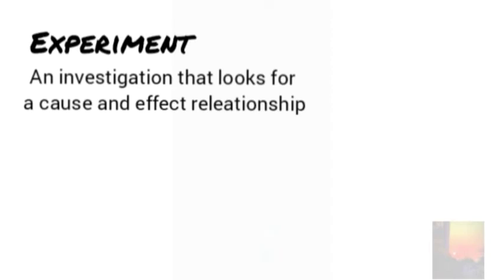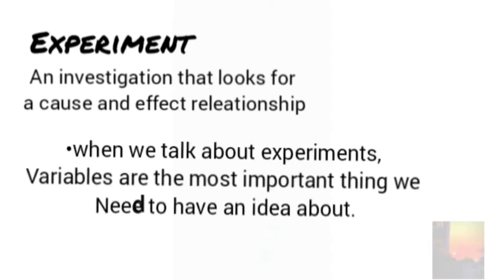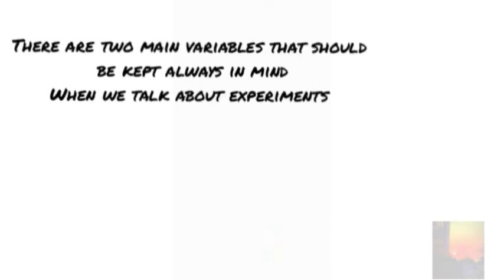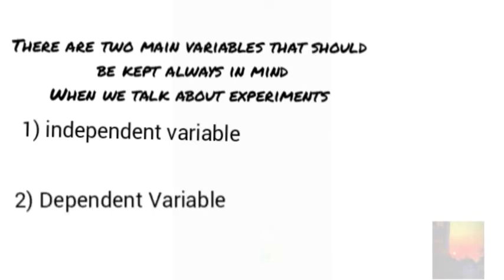When we talk about experiments, the most important thing you should be having an idea about are variables. There are two main variables we need to keep in mind always when we talk about an experiment. The first variable is an independent variable and the second variable is the dependent variable.